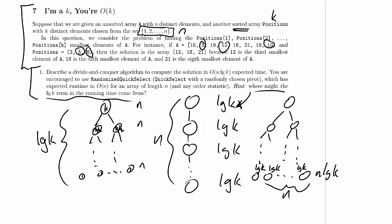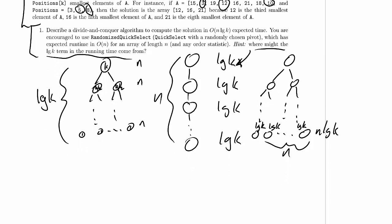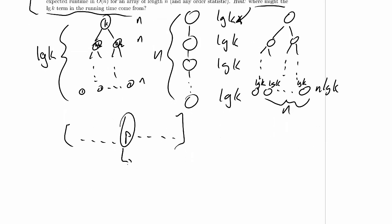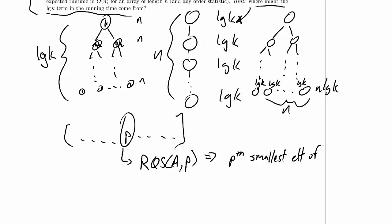To divide the positions array in half, since it's sorted we take the middle element — which is also the median — and call it p. We then call randomized quick select on array A with p as the order statistic, which gives us back the pth smallest element of A in expected linear time.